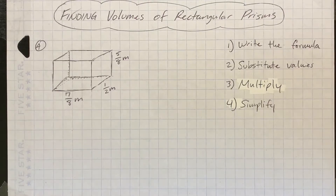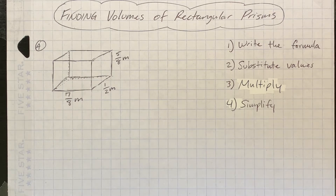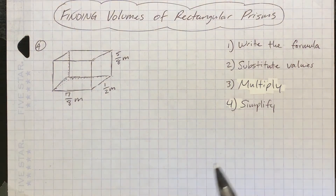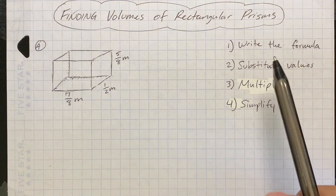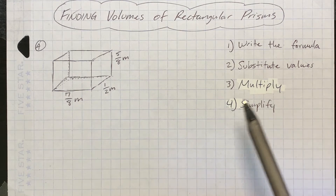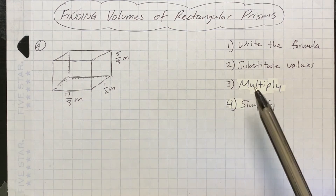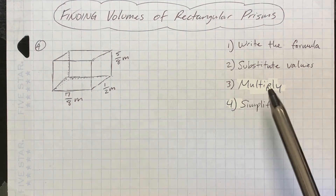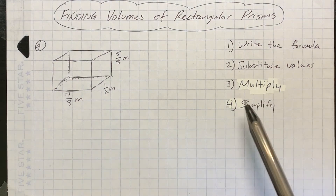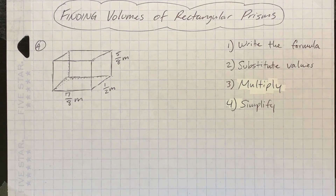Our first example: finding the volumes of rectangular prisms. Here are the steps. Step one, write the formula. Step two, substitute the values. Step three, multiply. And if needed, simplify.